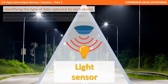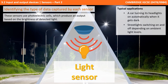Next up we have light sensors. These use photoelectric cells that produce an output depending on the brightness of the surrounding light. Cars and other vehicles often use this for the automatic switching on of headlights when it gets dark. Similarly, street lights can be turned on or off automatically depending on the surrounding ambient light levels.